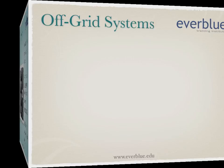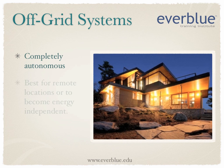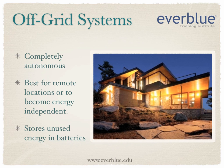Off-grid systems are the second major type of system set up. These systems are completely autonomous and independent from the grid. They are best for those who need power in remote locations or for those who want to be energy-independent. Off-grid systems store unused electricity in batteries.